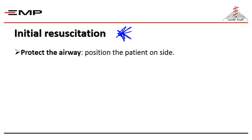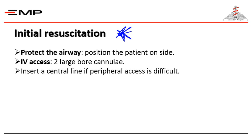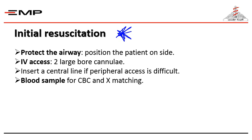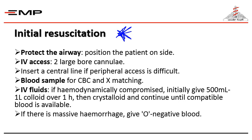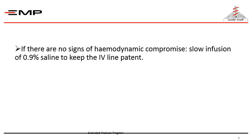Initial resuscitation means we have to protect the airway and position the patient on his side. We should have IV access with two large-bore cannulae; we may even insert a central line if peripheral access is difficult. We should take a blood sample for CBC and cross-matching, because we will probably need blood transfusion. Then we start intravenous fluids — if the patient is hemodynamically compromised, initially giving half a liter to one liter of a colloid over one hour, then a crystalloid, and continue until compatible blood arrives. If there is massive hemorrhage, we give O-negative blood.